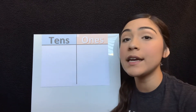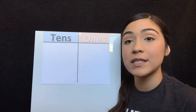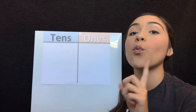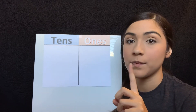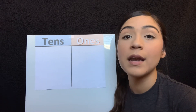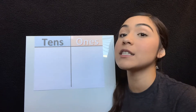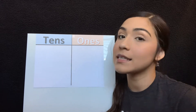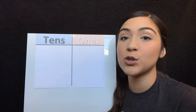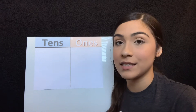A digit is any number from one to nine. So for example the number eight is one digit. Now what if we use sixteen? Now there are two digits. Remember a digit is from one to nine and sixteen is in between those numbers. The one is a digit and the six is a digit. Now let's try a couple examples.